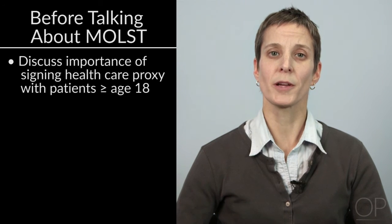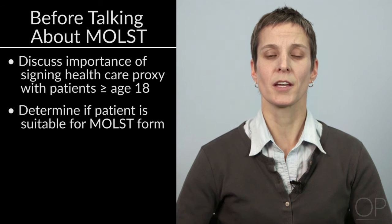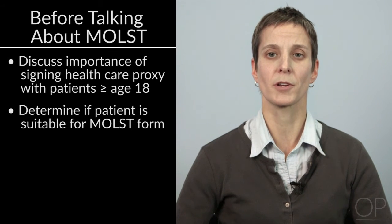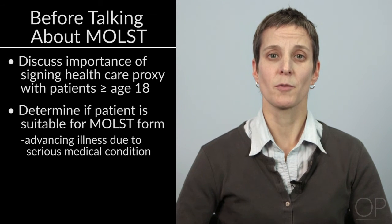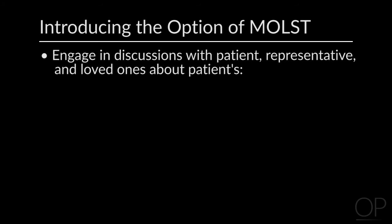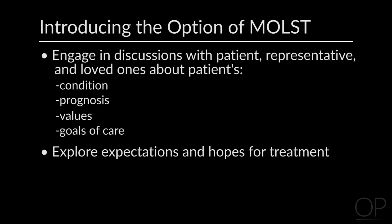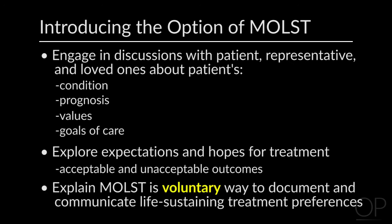It is important to talk to all patients older than 18 years of age about signing a health care proxy. Before talking about MOLST, it is important to determine if a patient may be suitable for a MOLST form based on his or her current medical condition. One should consider patients with advancing illness due to a serious medical condition, patients who have a DNR order, and patients who have a pre-existing MOLST form but current treatment preferences are not accurately reflected. When introducing the option of MOLST, engage in discussions with the patient, the patient representative, and other loved ones about the patient's condition, prognosis, values, and goals of care. Clinicians should explore expectations and hopes for treatment, especially what would be acceptable and unacceptable outcomes. Clarify that MOLST is a voluntary way to document and communicate preferences about life-sustaining treatments.